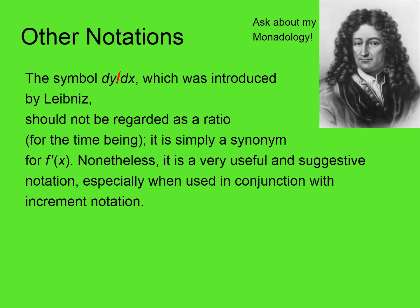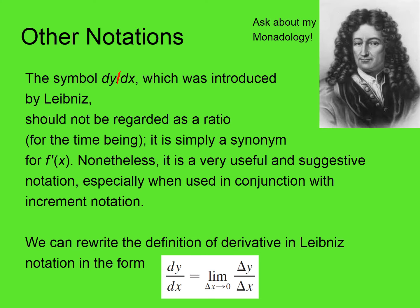Nonetheless, it is a very useful and suggestive notation, especially when used in conjunction with increment notation with the deltas — delta x. We can rewrite the definition of the derivative in Leibniz notation in the form: dy/dx equals the limit as delta x goes to zero of delta y over delta x. Delta, of course, is the Greek letter which usually functions as a 'd' does in English, so we see the dy dx in the delta y over delta x.